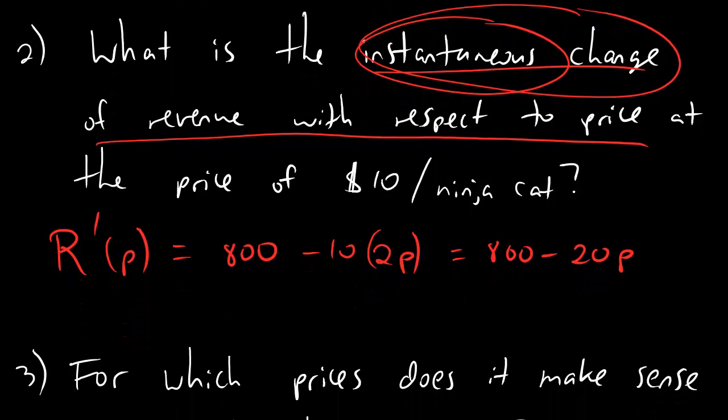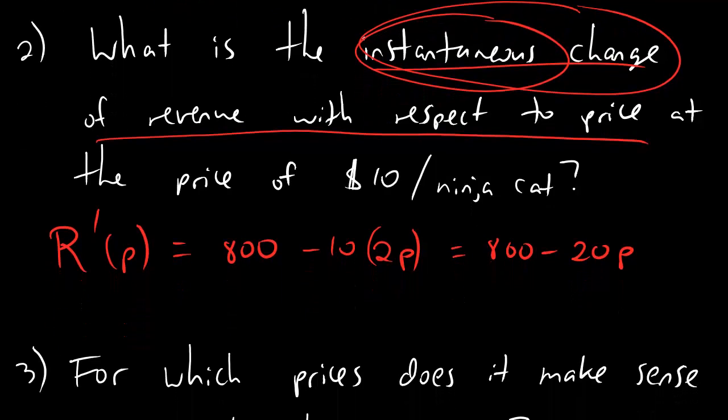So that's the derivative and that's cool, but that's not what they're asking. What they're asking is not what is the formula for instantaneous rate of change, they're actually asking us what happens at a particular point. What's the instantaneous change at the price of $10 per ninja cat? And all that means is you plug in $10 for p.